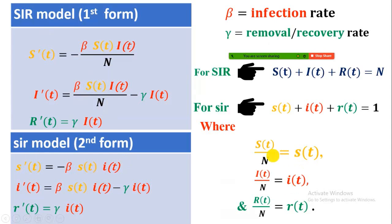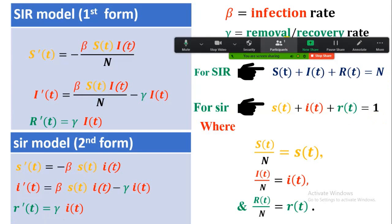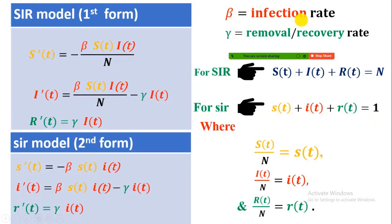Small s equals capital S divided by N, small i equals capital I divided by N, and similarly for small r. Also, capital S plus I plus R equals N. Beta and gamma are constants: beta is the infection rate and gamma is the removal or recovery rate. N is also constant. The three equations are: S'(t) = −βSI/N, I'(t) = βSI/N − γI, and R'(t) = γI.